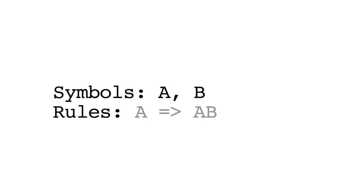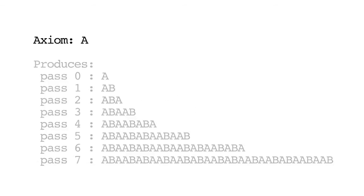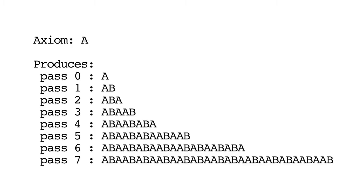A simple example would be using symbols a and b, as you can see on your screen, and the rules: a returns a, b; and b returns a. Giving a starting axiom, or seed, of a, we produce the following in each pass from 0 to 7.